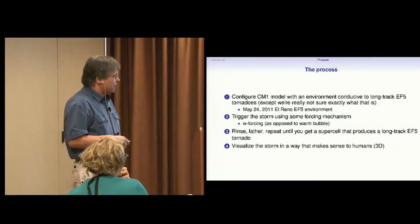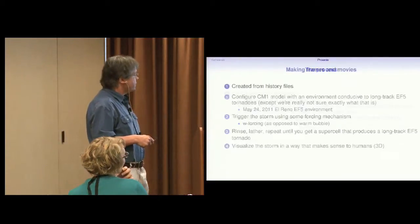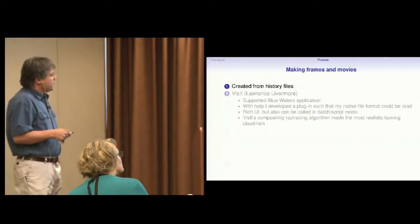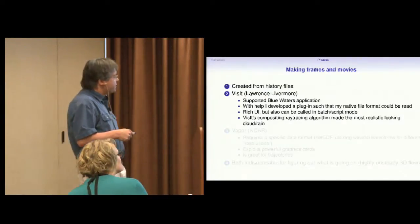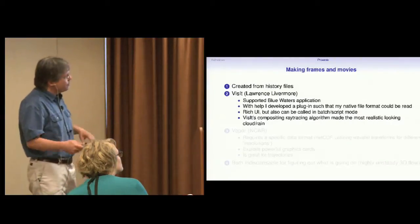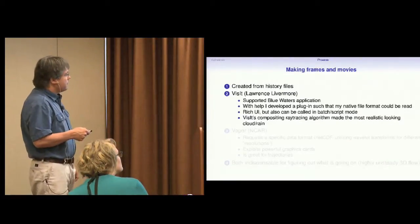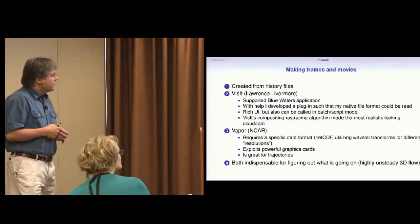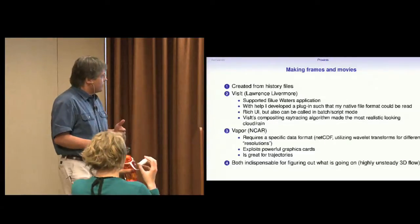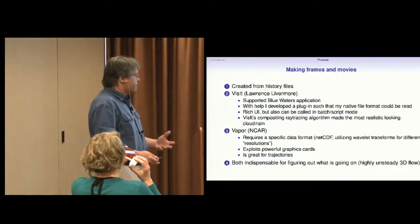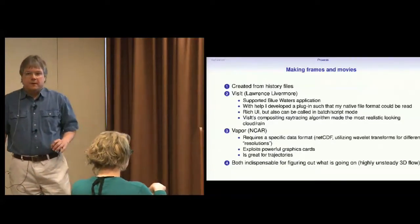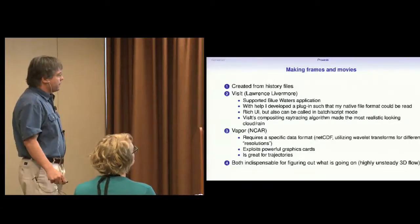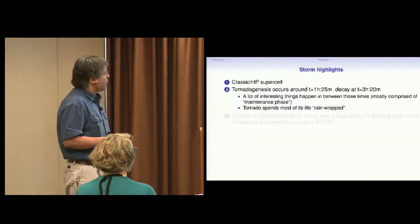So I'm going to share with you some of my visualizations and things like that. So all the stuff I'm going to show you was created from history files. I used Visit, and that's a supported Blue Waters application. I've learned a lot about it. I use it both in batch mode and interactive mode. I've been using Visit's compositing ray tracing algorithm to make many of the pictures you'll see. I also used Vapor from NCAR. It has its own data model. It's very good for doing trajectories, I've found. Both of these tools are absolutely indispensable for my work, and I'm very grateful for all the work that goes into making these tools. I'm trying to make... You'll see that some of the things that they can produce are quite nice.